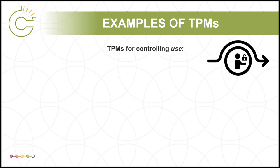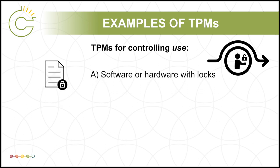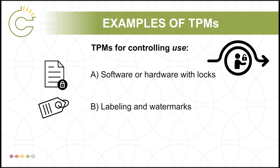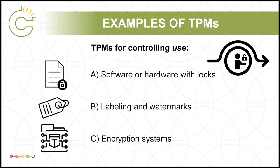TPMs that are for controlling the use or the copying of a work might include software or hardware that locks a work so that you can't copy, print, or download it. There are some PDF-based documents, including ebooks, that use these locking mechanisms, labeling and watermarks such as a company or artist's logo on an image, and lastly, an encryption system that scrambles content so that you can't view or copy it without authorization from the rights holder.